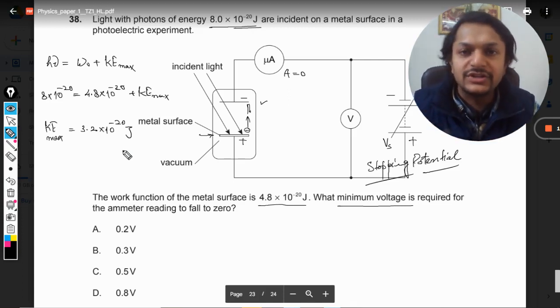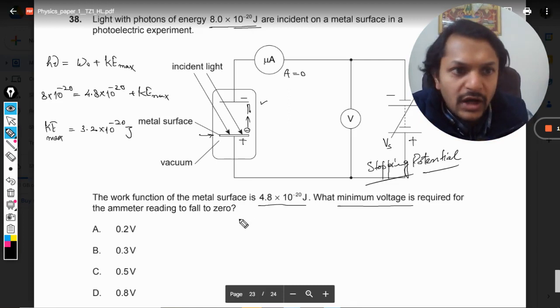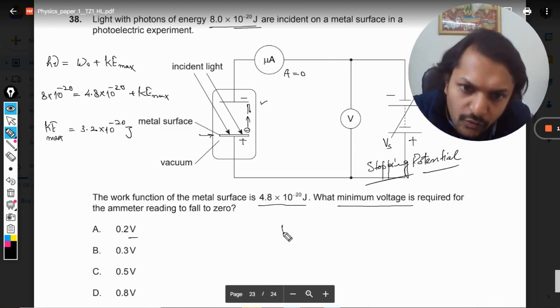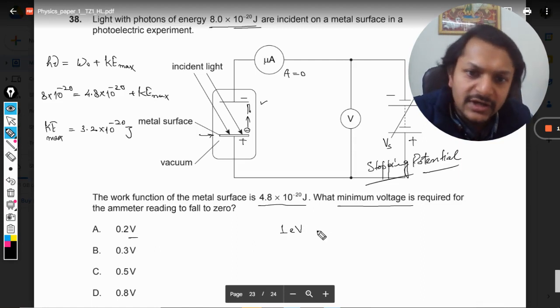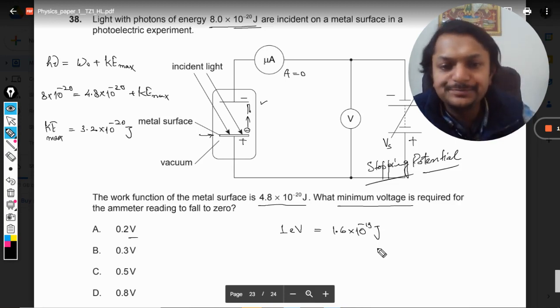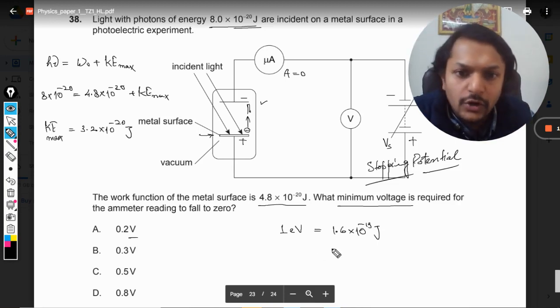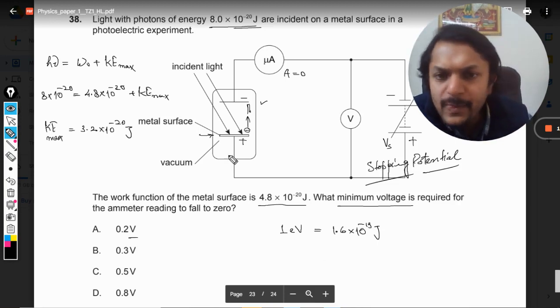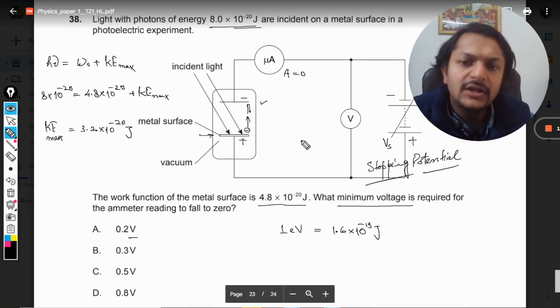The units are very important in this question, so always concentrate on units. Here we have found the kinetic energy with the SI units, that is joules. Now how do we define one electron volt? Because our answer is involved and we want to find the potential, so one electron volt is the unit and this is defined as 1.6×10^-19 joules.